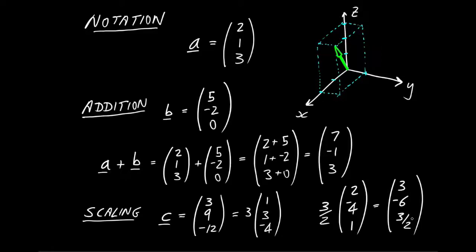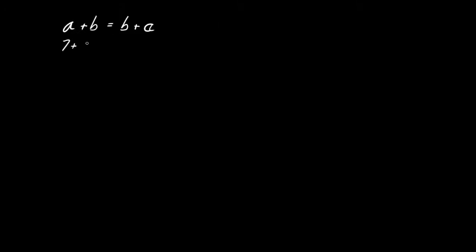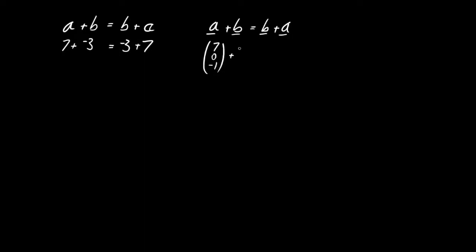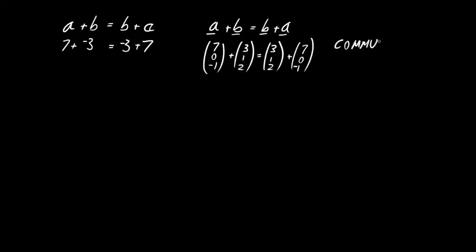With these definitions of addition and scaling, can we say anything about the properties? For ordinary numbers, a plus b is the same as b plus a — that's obvious: 7 plus minus 3 equals minus 3 plus 7. If we think about the same statement for vectors, is vector a plus vector b the same as vector b plus a? Of course it must be. For example, (7, 0, minus 1) plus (3, 1, 2) equals (3, 1, 2) plus (7, 0, minus 1), because vector addition is just adding each element to the corresponding element. This property is called being commutative.